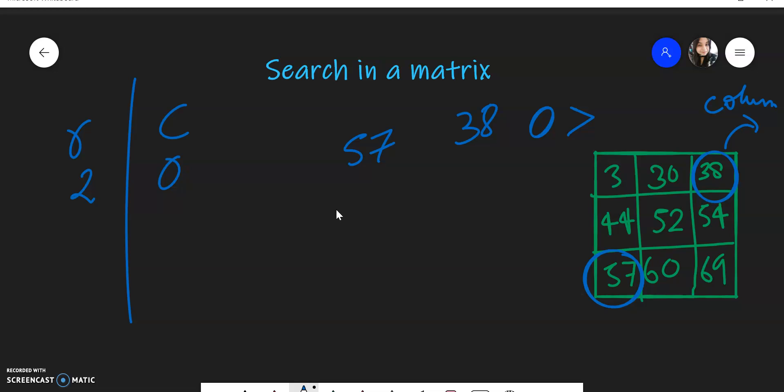So because 38 is less than 57, we will decrement the row. Row will become three. I'm sorry, row will become one and column will be zero. So our pointer will be here. Now again, because this number is greater than what we have to find. Now in this case, whatever the element we need to find is greater. So the row will remain same and column will be incremented to one. Now we are here.